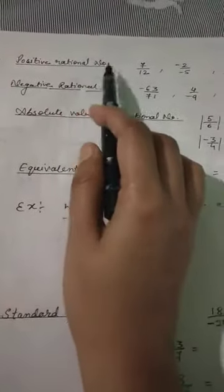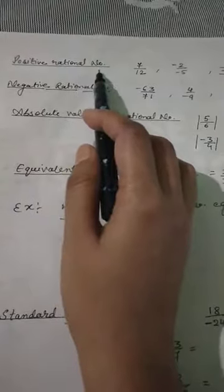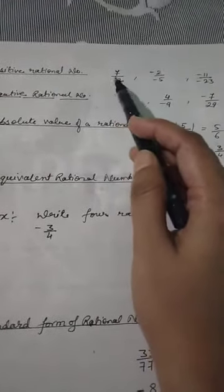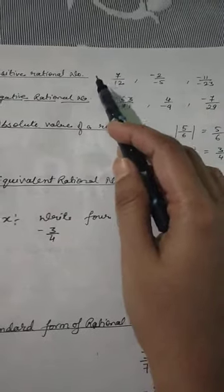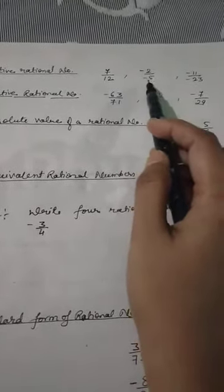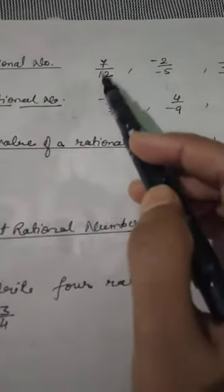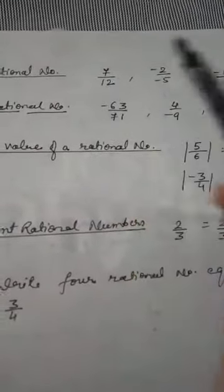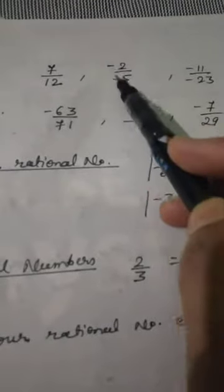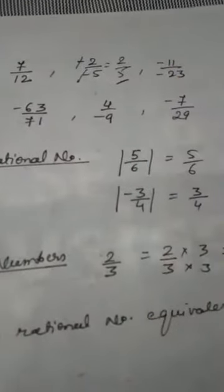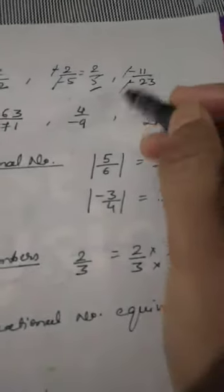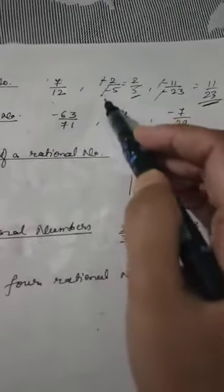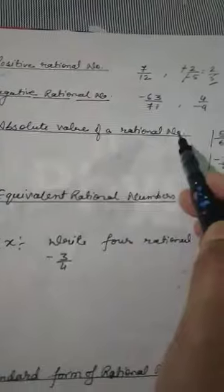Now, positive rational numbers. A rational number is said to be positive if its numerator and denominator are either both positive or both negative. If both are positive, it is clearly positive. If both are negative, the negatives cancel out and we get a positive rational number.